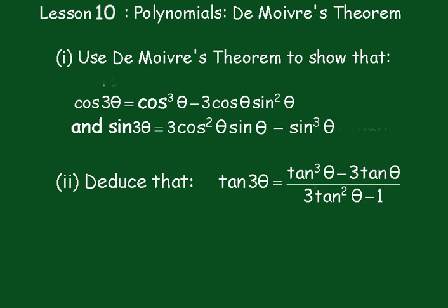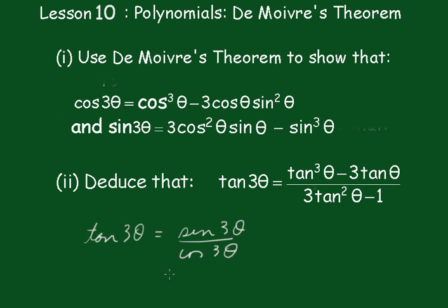In part two, we have to deduce that tan3θ equals (3tanθ − tan³θ) over (1 − 3tan²θ). We'll use the results from part one. We know of course that tan3θ is equal to sin3θ over cos3θ.